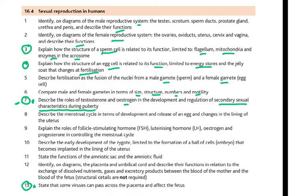Describe the menstrual cycle — that's old. Then explain the role of FSH and LH, estrogen and progesterone in controlling the menstrual cycle — also in the old syllabus. Describe the early development of the zygote, limited to the formation of a ball of cells called the embryo, that becomes implanted in the lining of the uterus. State the functions of the amniotic sac and the amniotic fluid. Identify on diagrams the placenta and umbilical cord. Describe their functions in relation to the exchange of dissolved nutrients, gases, and excretory products between the blood of the mother and blood of the fetus — the two should never mix as they could be different blood groups. State that some viruses can pass across the placenta and affect the fetus — this is new in the syllabus.